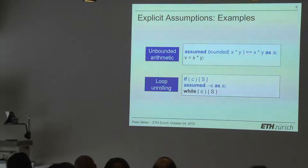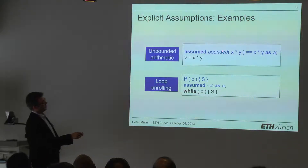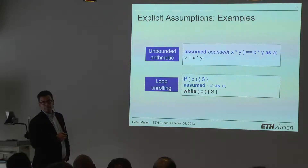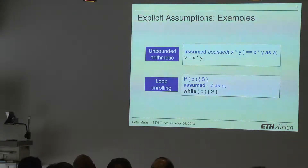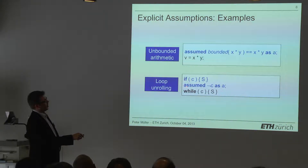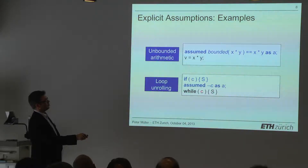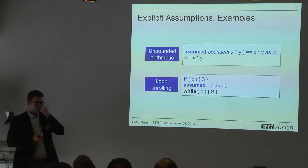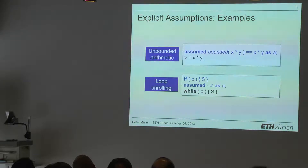Here are two encoding examples. For unbounded arithmetic — say V gets X times Y — we write: 'assumed that the bounded multiplication of X times Y equals the unbounded multiplication', named A. For loop unrolling, to express ESC Java's one-and-a-half iterations: we unroll the loop once, then afterwards say the verifier assumed that from now on the loop condition C is false. We run through C one more time and then have assumed the loop terminates. The operational behavior of the program doesn't change, but we've recorded what the verifier assumed.